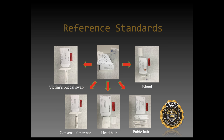Now we're transitioning to reference standard samples. When we test these swabs and develop all of these complicated DNA profiles, the scientist needs to make heads or tails of whose profile belongs to whom. One of the first things we need to do is determine the victim's DNA profile so we can subtract that victim's DNA from the background and focus on the putative perpetrator. We ask nurses to take a buccal swab — a cheek swab, a swabbing of the inside of the mouth — place it into a cardboard container. We test that sample so we can focus on the putative perpetrator.